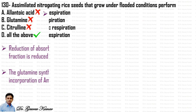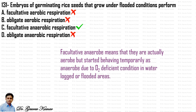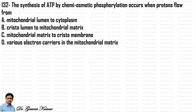Next question: embryos of germinating rice seeds that grow under flooded conditions perform — what type of respiration? We know that in flooded conditions they perform anaerobic respiration, but option C — facultative anaerobic respiration — is correct, because facultative anaerobic means they are normally aerobes but temporarily behave as anaerobes due to O2-deficient conditions in waterlogged areas.